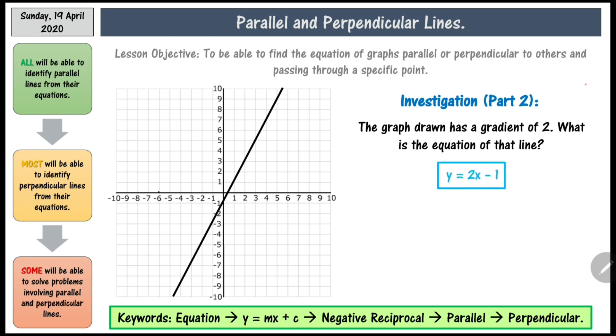The answer should be y equals 2x minus 1, since the gradient is already provided and the y-intercept is negative 1.